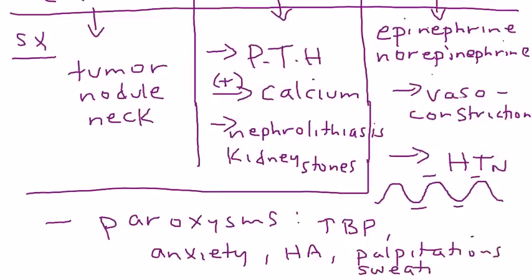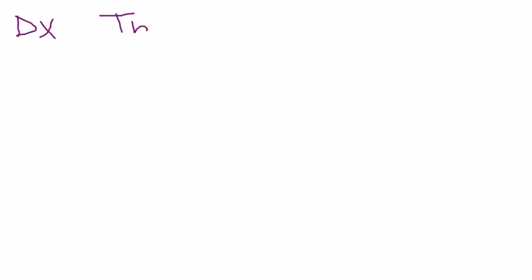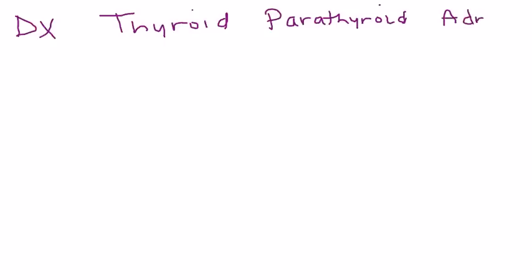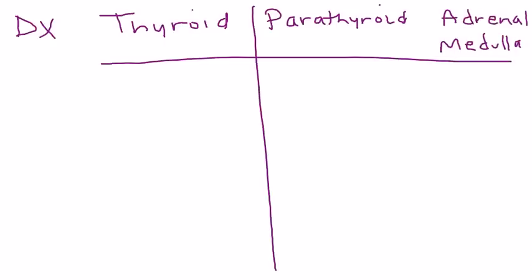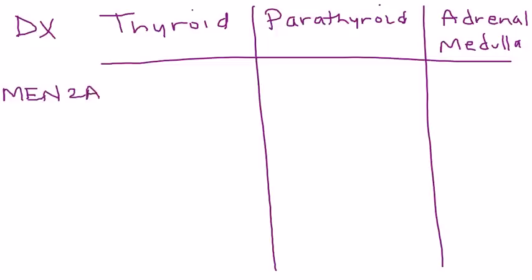As you can tell from these symptoms, they are all strong sympathetic nervous system responses. Now for diagnosis: since MEN2A involves the thyroid, parathyroid, and adrenal medulla, a big component of the diagnostic workup is imaging to localize these tumors, which is usually done with a CT or MRI.